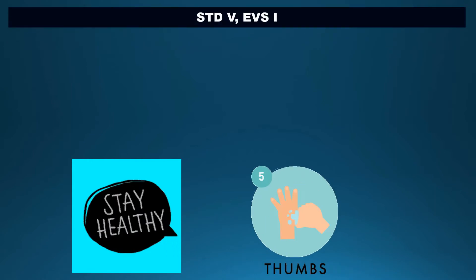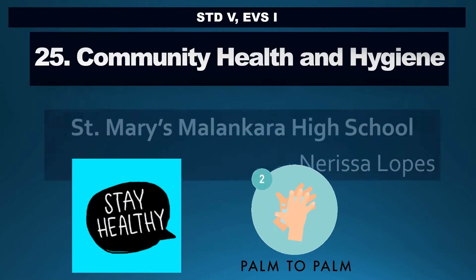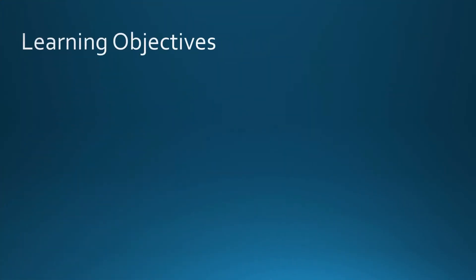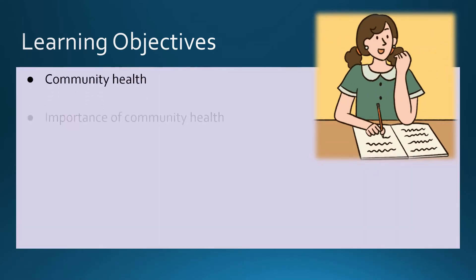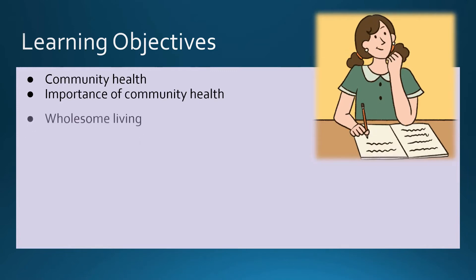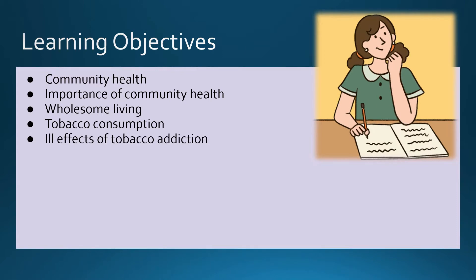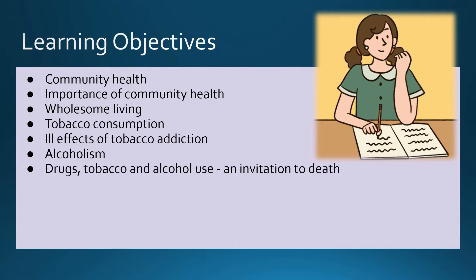Welcome dear children to Standard 5 EDS 1. Today we will study Chapter 25 Community Health and Hygiene. The learning objectives for this session are to study about community health, its importance, what wholesome living means, tobacco consumption and ill effects of tobacco addiction, alcoholism, and to know that drugs, tobacco and alcohol use is an invitation to death.